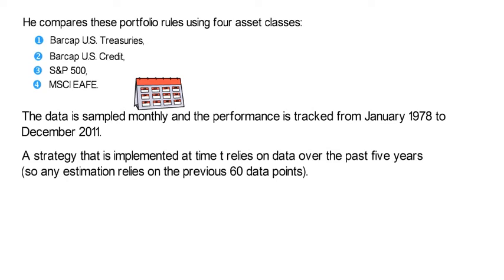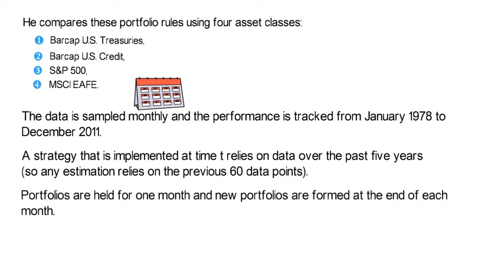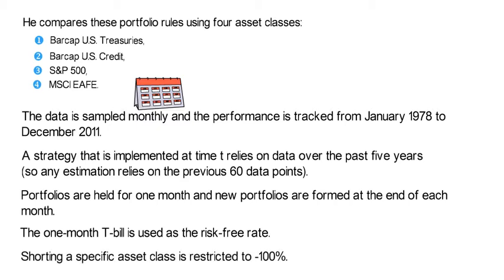The data is sampled monthly and performance is tracked from January 1978 to December 2011. A strategy implemented at time t relies on data over the past five years, so any estimation relies on the previous 60 data points. Portfolios are held for one month and new portfolios are formed at the end of each month. The one-month T-bill is used as the risk-free rate, and shorting a specific asset class is restricted to minus 100%.